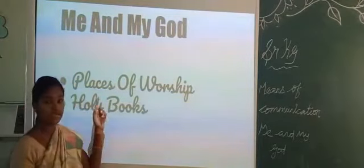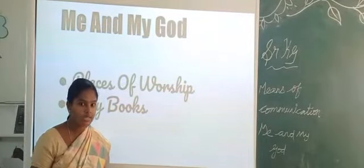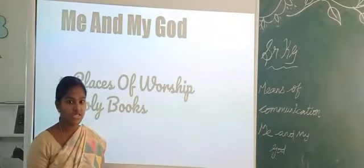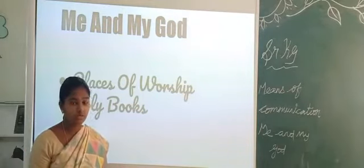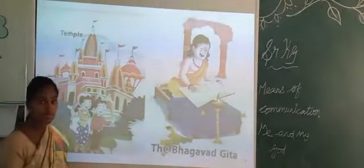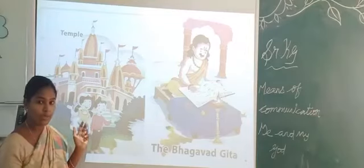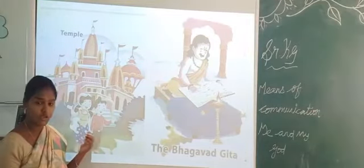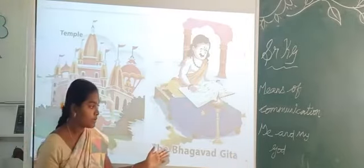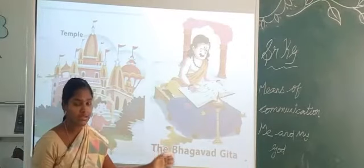Now we are going to speak about places of worship and holy books. God is one. According to the people, they pray to God according to their religion. The first place of worship is Temple. Hindu people go to temple for prayer. The holy book of Hindus is the Bhagavad Gita.